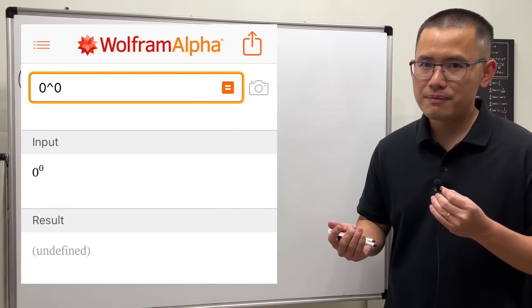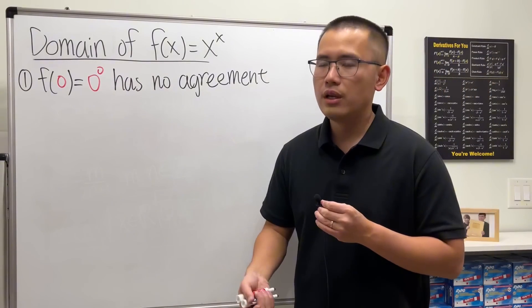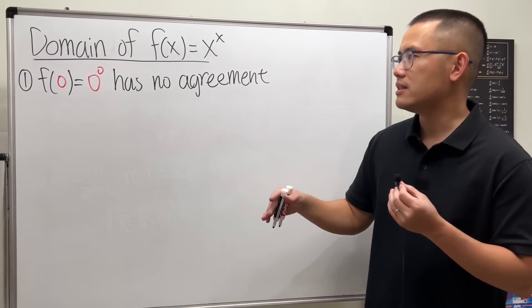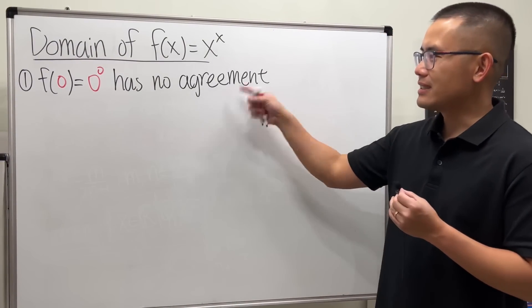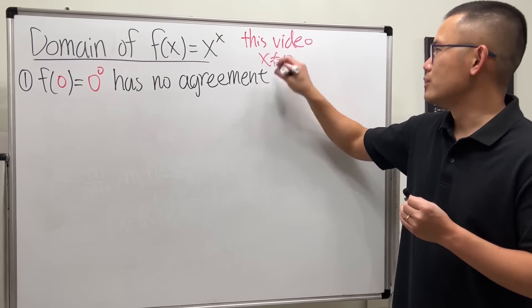As long as you don't say 0^0 equals 0, or 0^0 equals 17, you can debate whether it's one or undefined. There's no agreement. So in this video, I don't want x to be zero because it's annoying. Let's get rid of that.